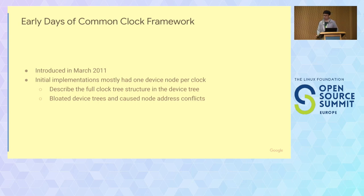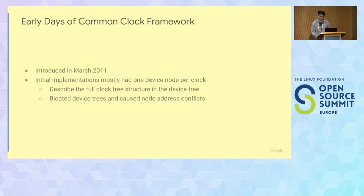In 2011 there was the beginning of the common clock framework, which implements basic clock types like dividers, muxes, gates, and multipliers. Initially this was done with one clock per device node — one node for a multiplier, one for a multiplexer, one for a divider, one for a gate.